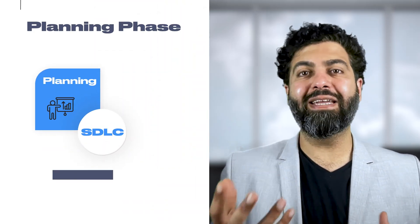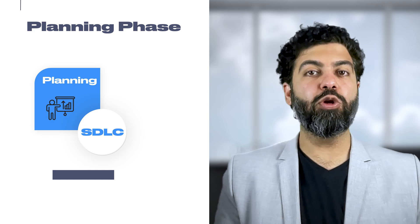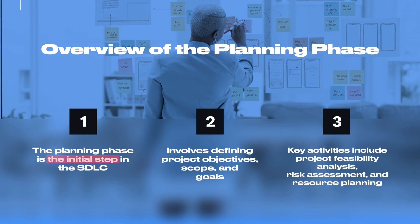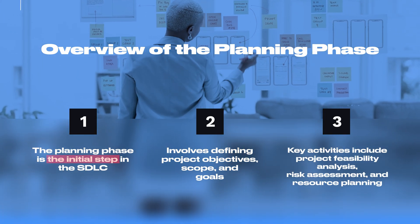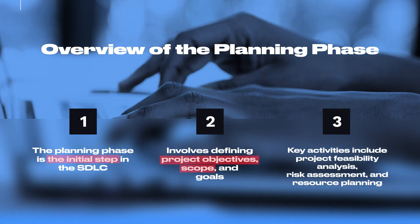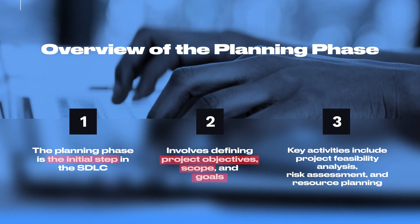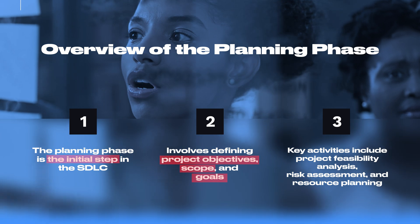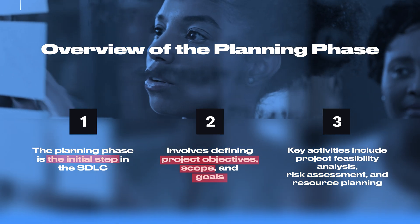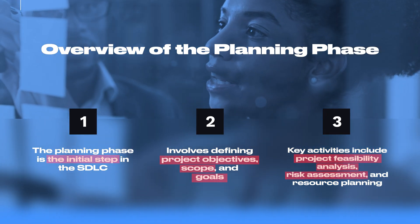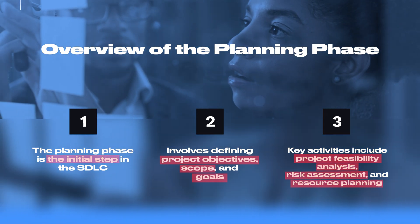Consider it like planting a seed for your software project. The planning phase is the first step of your STLC. It involves project objectives, scope, and goals definition. The key activities that we include in a planning phase are the project feasibility analysis, risk assessment, and resource planning.